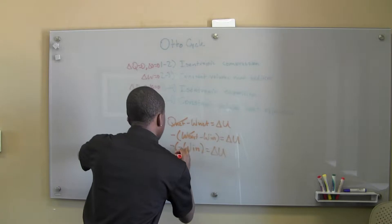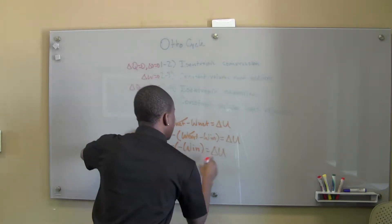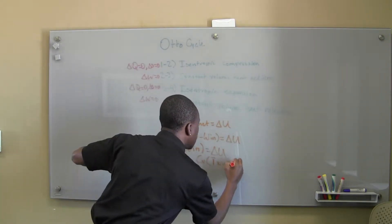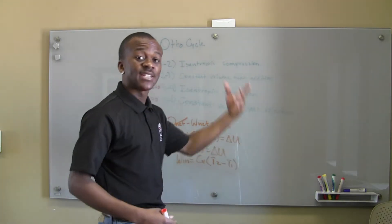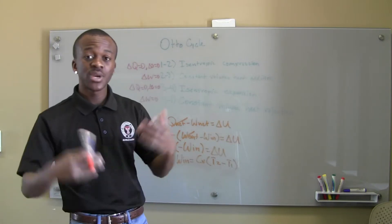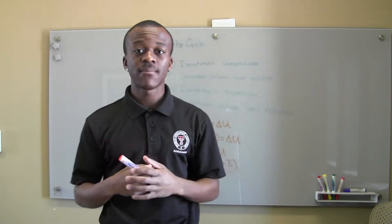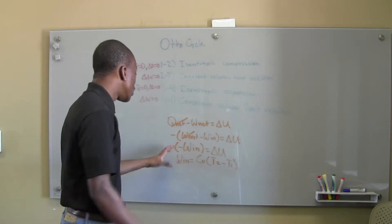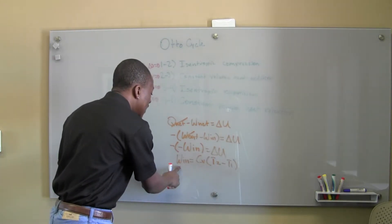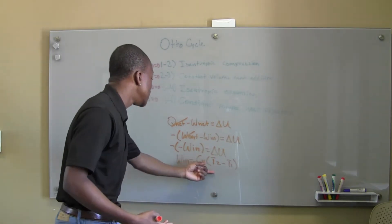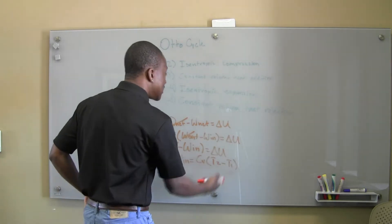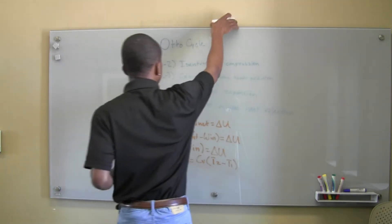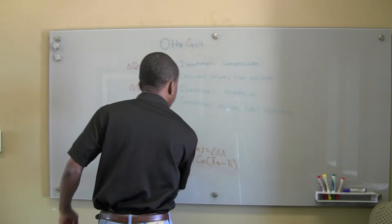Canceling the negatives, W_in equals delta U, which becomes c_v(T2 - T1). T2 will be higher than T1, and T3 is the highest temperature in the Otto cycle — so if T3 comes out lower than your other temperatures, you've done something wrong. The c_v comes from the change in internal energy, delta U = c_v * delta T, because we assume an ideal gas.